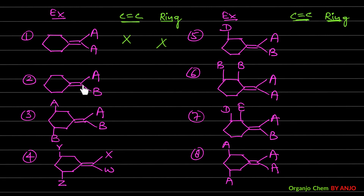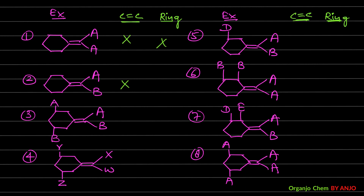Example 2: Looking at the SP2 carbon of the alkene, we have two different groups. But according to CIP rules, the other SP2 carbon's two parts are equivalent — both sides have CS2, making them equal. So GI from the alkene is not possible. For the cyclic part, no disubstituted carbon is present; all carbons have two identical hydrogens. So example 2 shows GI from neither the alkene nor the ring.